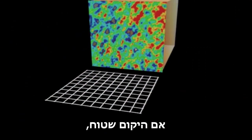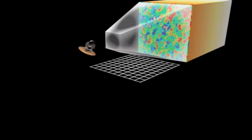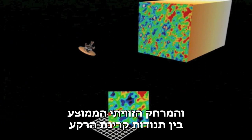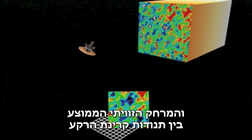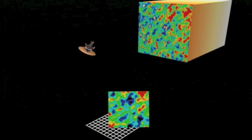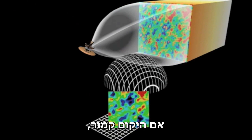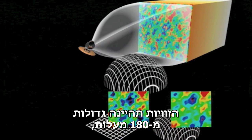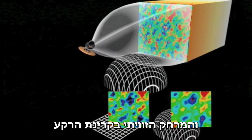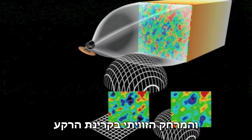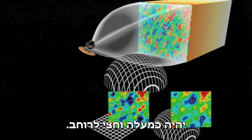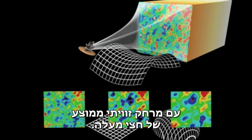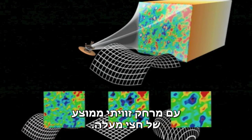If the universe is flat, our triangle would have straight lines, and all angles would equal 180 degrees, and the average angular distance between the CMB fluctuations would be 1 degree. If the universe was positively curved, our lines would bend outward, and our angles would be greater than 180 degrees, and the angular distance in the CMB would be about one and a half degrees across. A negatively curved universe would show an average angular distance of half a degree.